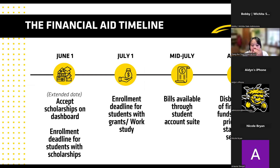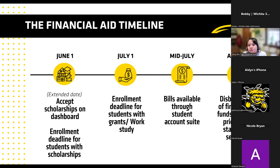Here's our current financial aid timeline. If you're offered scholarships like the Merit Scholarship or the University Freshman Scholarship, you want to accept on your financial aid dashboard by June 1st. You also need to enroll by June 1st. Classes are filling up quickly, so make sure you get that done. July 1st is the enrollment deadline for students offered grants like the Pell Grant or work study amounts. Mid-July is when you'll see your bills available through the student account suite, and around 10 days before the start of the semester in August is when financial aid will apply to your bill.